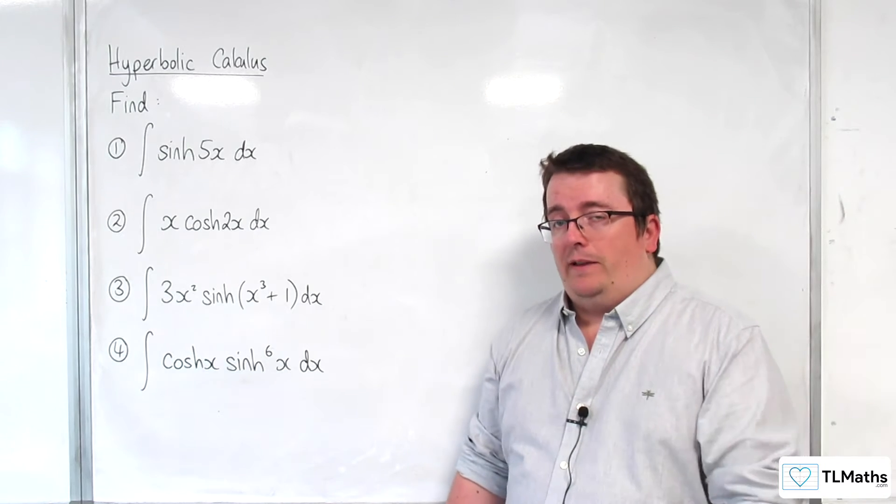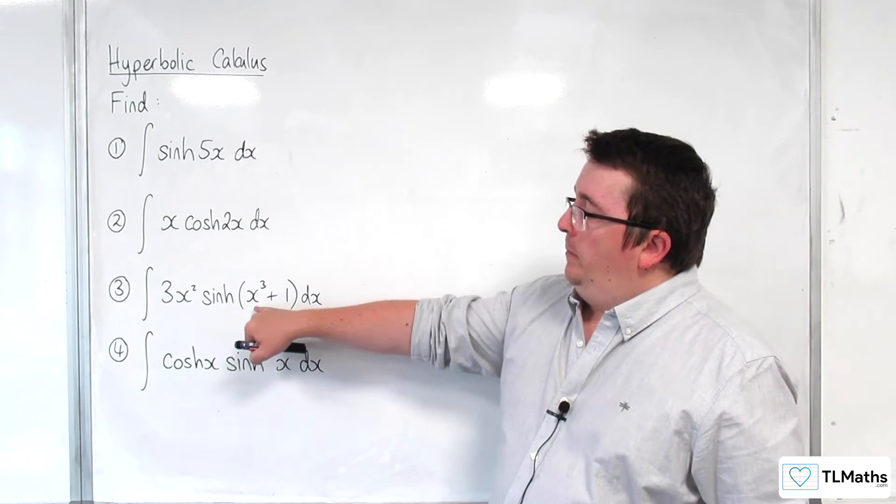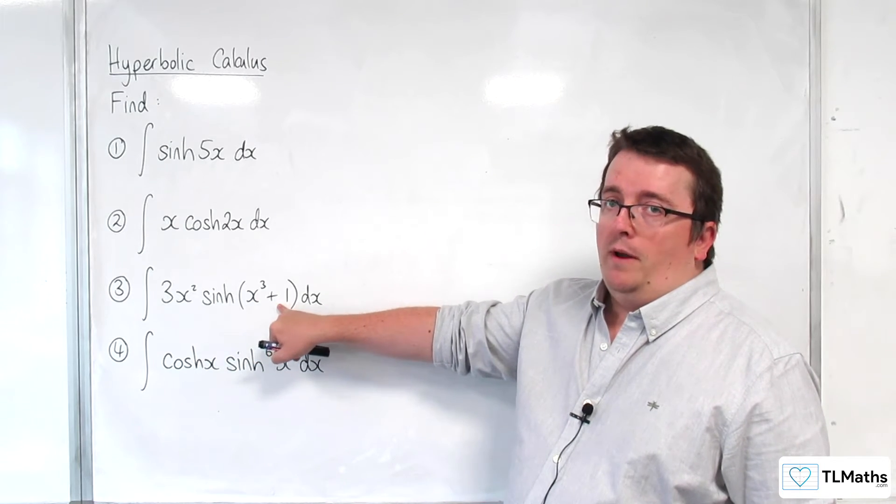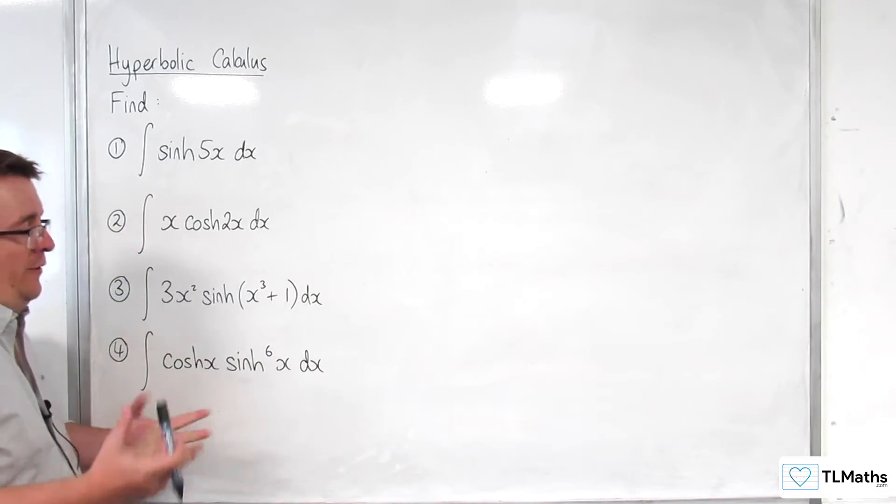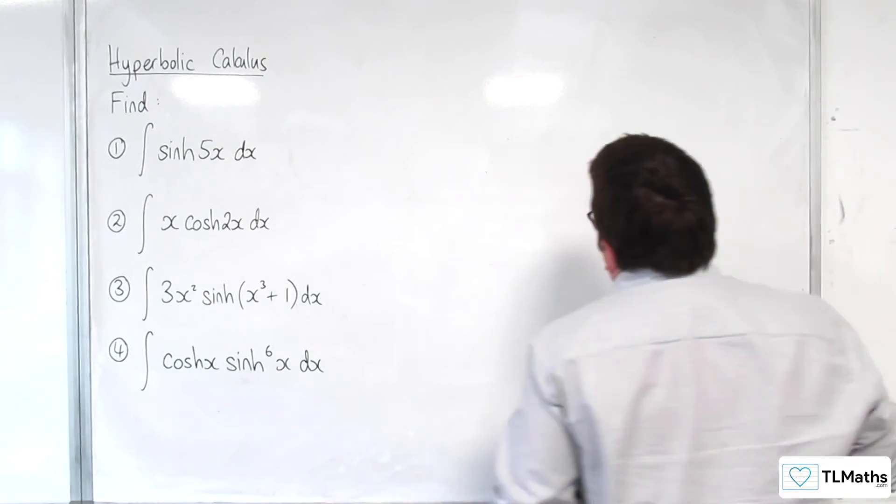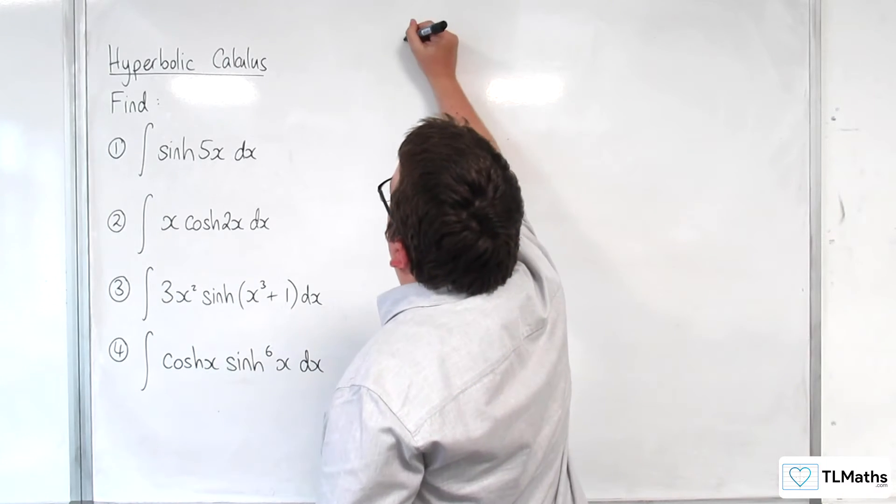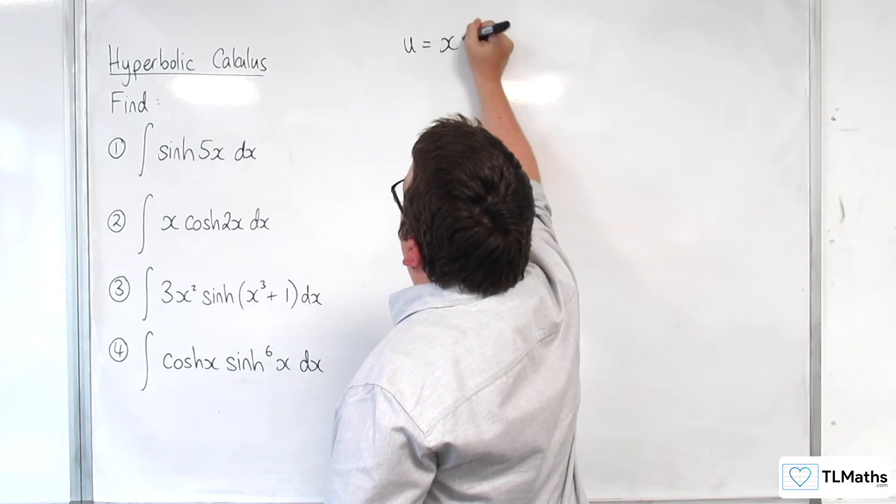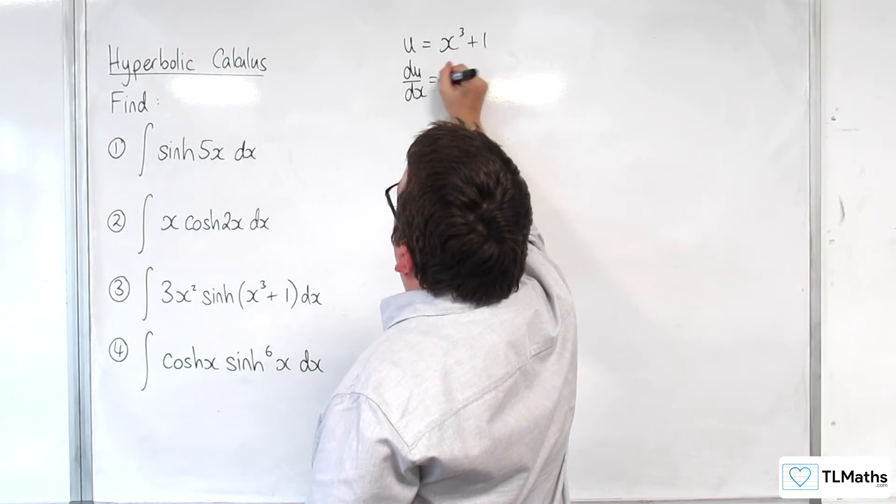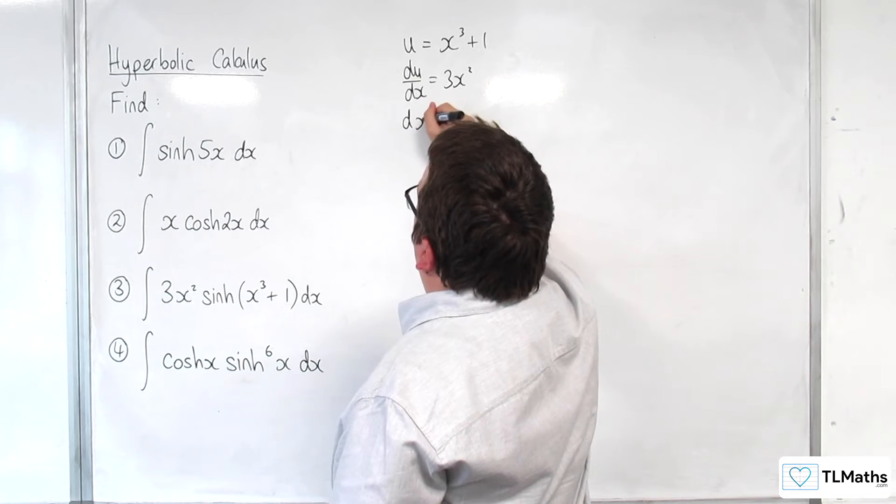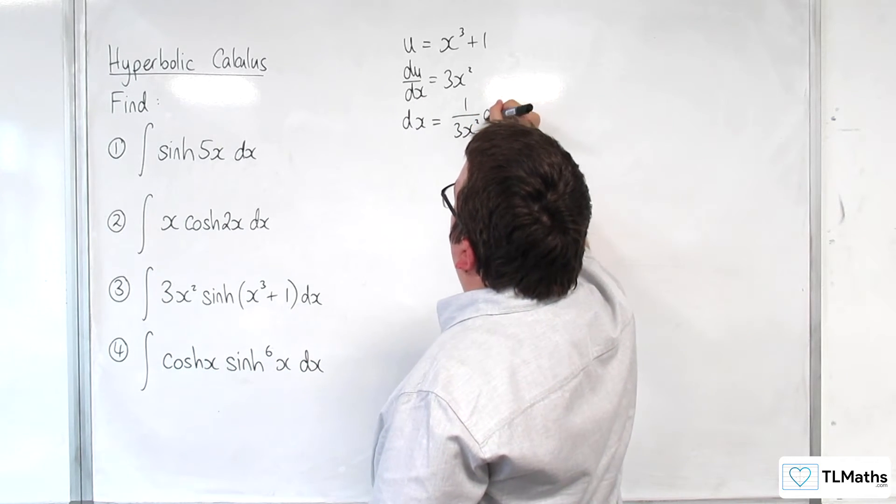If you're a little bit unconfident about doing that, you can use integration by substitution by letting u be x cubed plus 1. However, let's do it by integration by substitution, just so we've got that bit of practice in. So u would be x cubed plus 1. Du/dx is 3x squared. So dx is going to be 1 over 3x squared du.